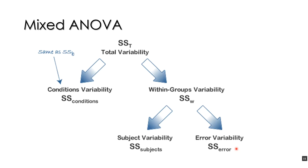When we start talking about within-subjects designs or a mixed ANOVA, things get very complicated very quickly. In a mixed design — where one factor is between subjects and another is within subjects — we have the total sum of squares of the experiment, the total variability, and we divide that into variability due to conditions and variability within groups.